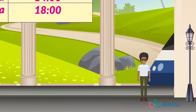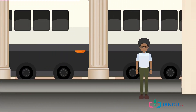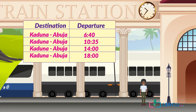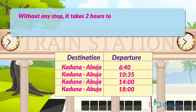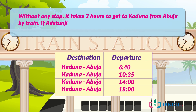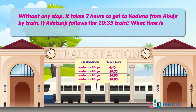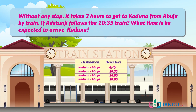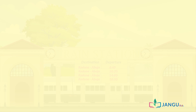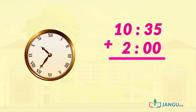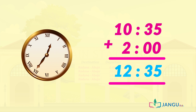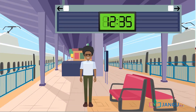Meet Adetunji. He wants to travel to Kaduna from Abuja by train. At the train station, he sees a timetable showing the departure time of the train from Abuja to Kaduna, but the arrival time was not on the timetable. Without any stop, it takes 2 hours to get to Kaduna from Abuja by train. If Adetunji follows the 10:35 train, we add 2 hours to 10:35, giving 12:35. Therefore, Adetunji's estimated time of arrival is 12:35.